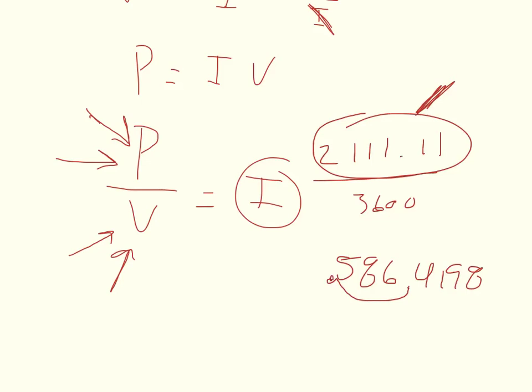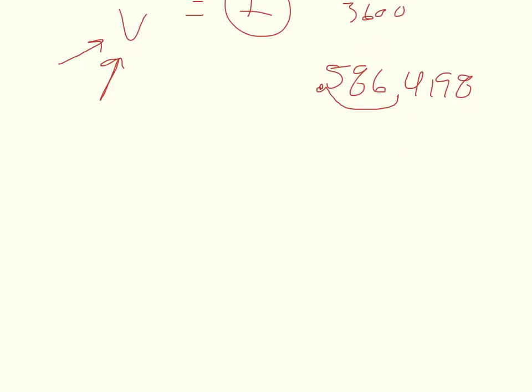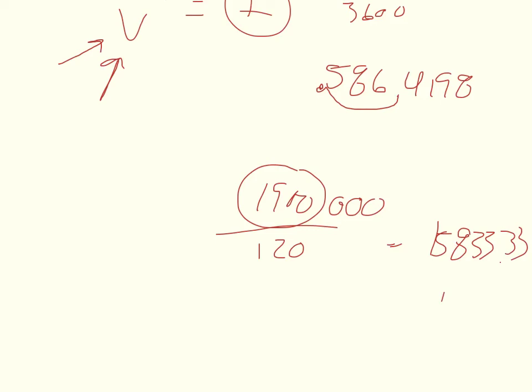And then in the secondary current, so the secondary current, my equation becomes 1,900 divided by 120. And then I've got to change this into SI units by multiplying it by 10 to the third, and so the current should be 15,833.33 amps.